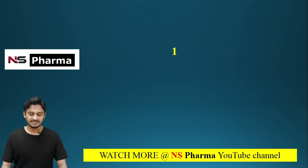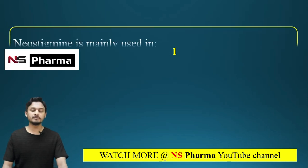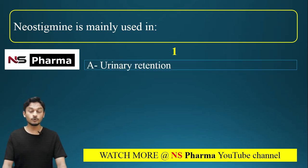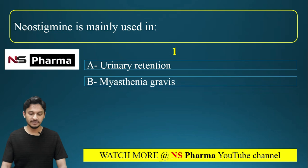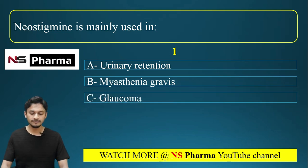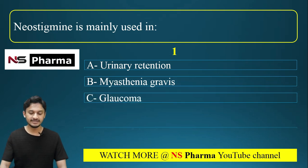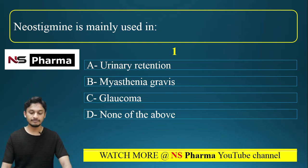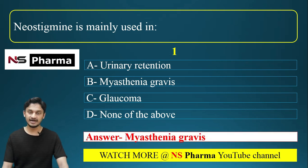The first question is: Neostigmine is mainly used in. Options are: Option A, Urinary Retention; Option B, Myasthenia Gravis; Option C, Glaucoma; Option D, None of the above. The correct answer for this question is Option B, Myasthenia Gravis.